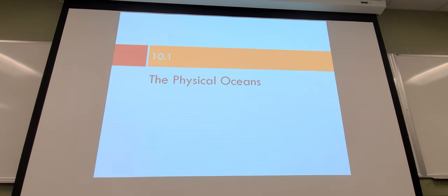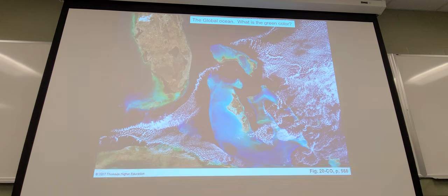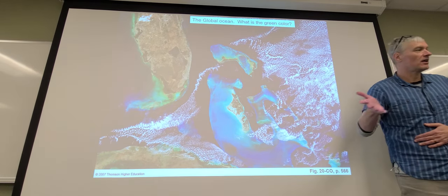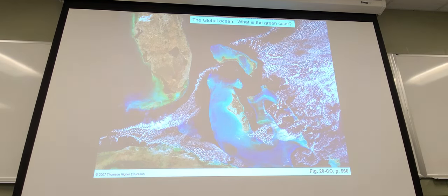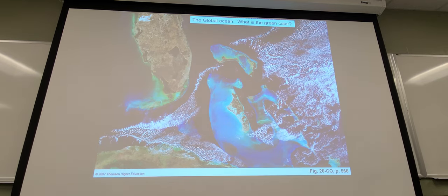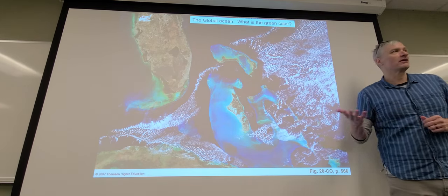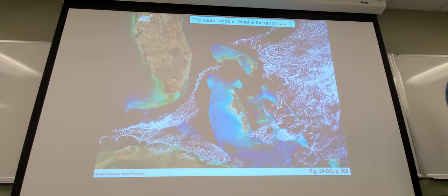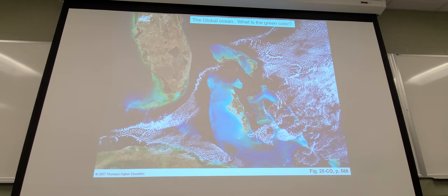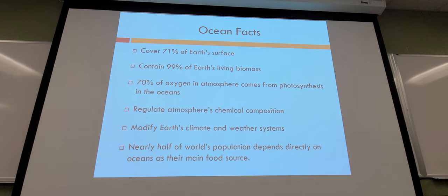Coastal dead zones worldwide are usually correlated with heavy agricultural inputs, especially fertilizer. A simple rule of thumb for physical oceans: the shallower the water, the more sunlight can hit different areas, and therefore the more life. The deeper you go, the less light, and thus less life — though creatures can survive without light, they don't have a lot to eat.